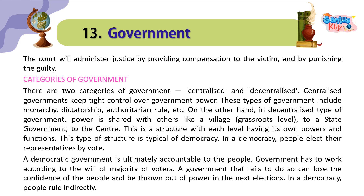This is a structure with each level having its own powers and functions. This type of structure is typical of democracy. In a democracy, people elect their representatives by vote. A democratic government is ultimately accountable to the people. Government has to work according to the will of the majority of voters. A government that fails to do so can lose the confidence of the people and be thrown out of power in the next elections. In a democracy, people rule indirectly.